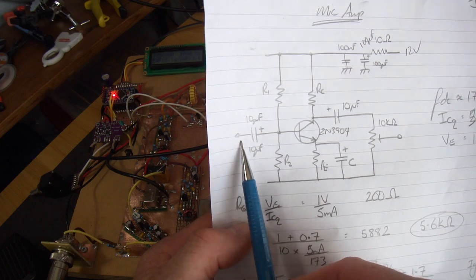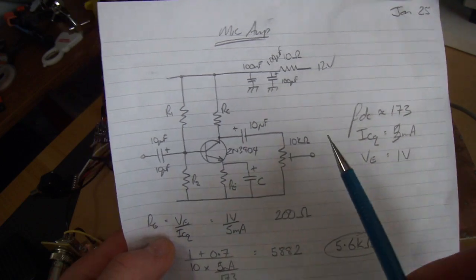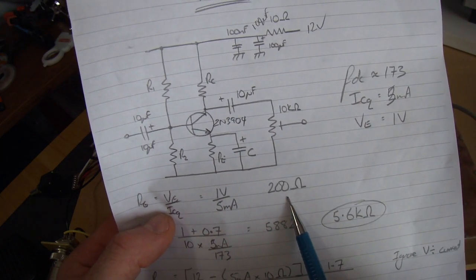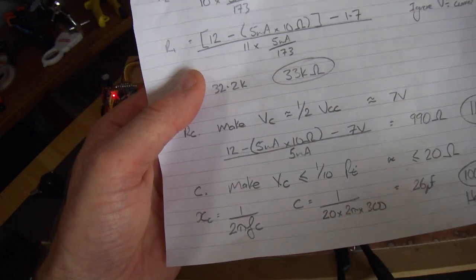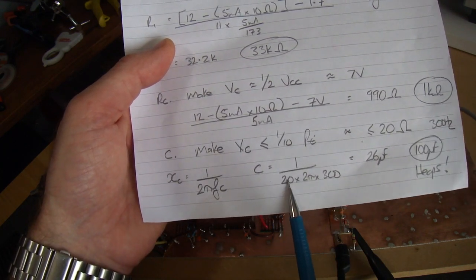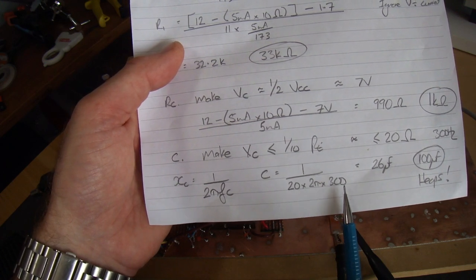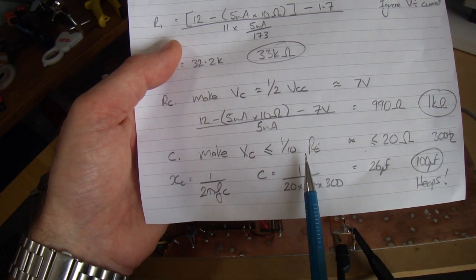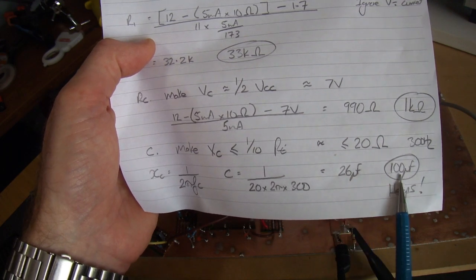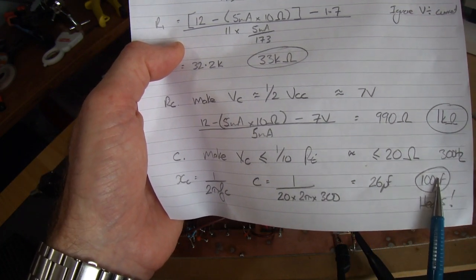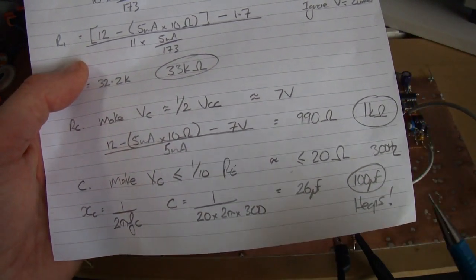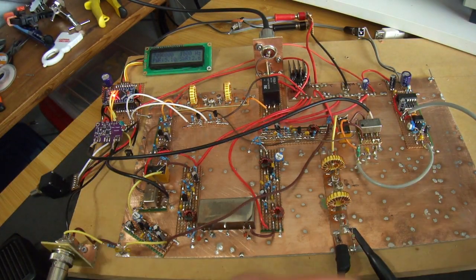Because my signal coming in is so small off that dynamic microphone, I'm not going to drive this into saturation. This capacitor here, rule of thumb, needs to be no greater than a tenth of RE. We said RE is 200 ohms, so a tenth of that is 20 ohms. So Xc equals 1 over 2πfc. We want that to be no greater than a tenth of our RE at the lowest operating frequency, which would be 300 hertz. Comes out at 26 microfarads. I'm going to be a bit silly and use 100 microfarads to really make sure that you pass those low frequencies through the amplifier.